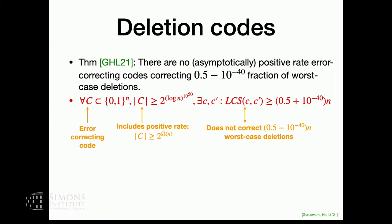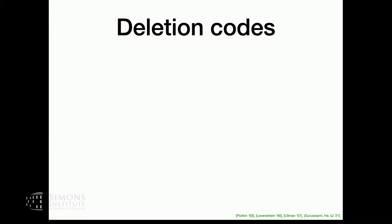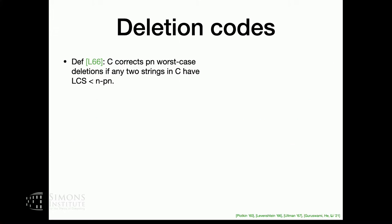This is a fundamental result about deletion codes. Insertion/deletion error-correcting codes were originally studied by Levenstein and Ullman. There's a classic result that says a code corrects p*N worst-case deletions if any two strings have pairwise LCS less than N minus p times N. In coding theory, we often measure how good a code is by the rate. So you can ask, what is the optimal trade-off between the rate and the noise tolerance? Let's ask this for deletions, which is a very mathematically fundamental model.